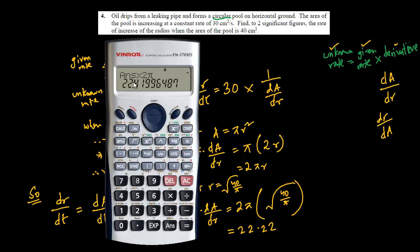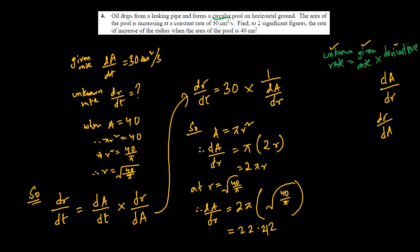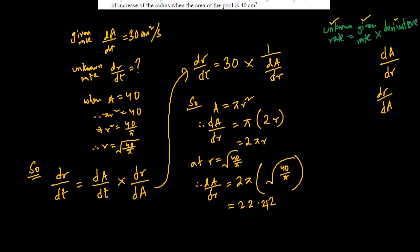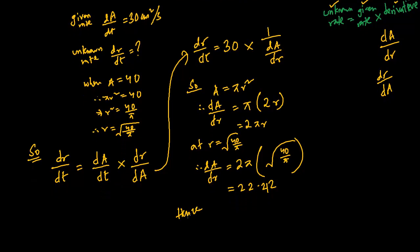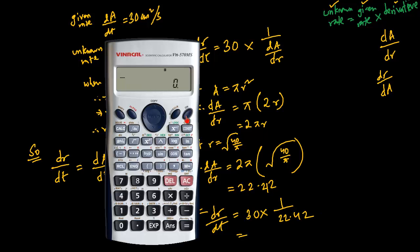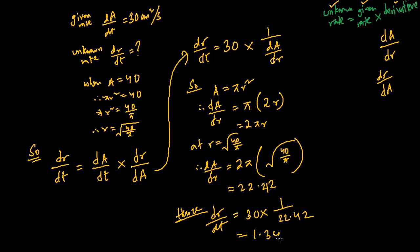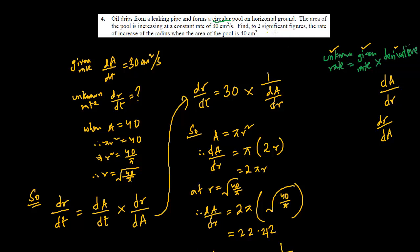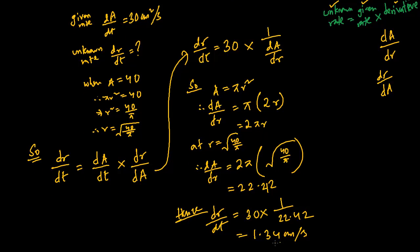So dA/dr ≈ 22.42. Therefore dr/dt = 30 × (1/22.42) = 30 ÷ 22.42 ≈ 1.34 cm per second. We have to pay attention to the required format: two significant figures. So the answer is not 1.34 but 1.3 cm/s — that is two significant figures.